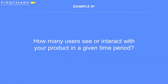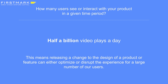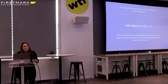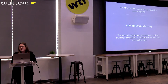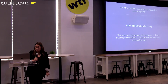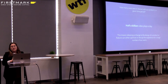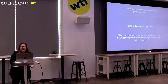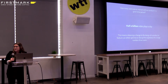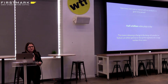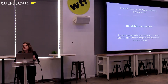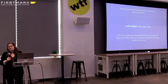Our first example: how many users see or interact with our product in a given time period? JW Player is a video technology with a metric of half a billion video plays a day. Releasing a change to the design of a product or feature can either optimize or disrupt the experience for a large number of users. We have 185 billion views a year, but on a given day we have half a billion. That introduces a lot of risk, and when you mature to a threshold of consumption, it's really important to understand that impact.